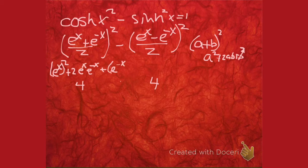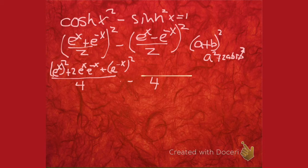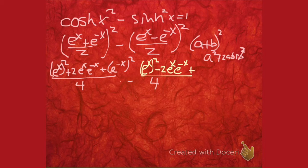And then I'm going to subtract off the same thing over here with a little bit of signage different. So that's e to the x squared minus 2 times e to the x, e to the minus x plus e to the minus x squared.